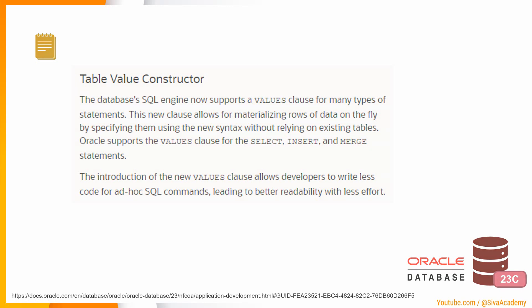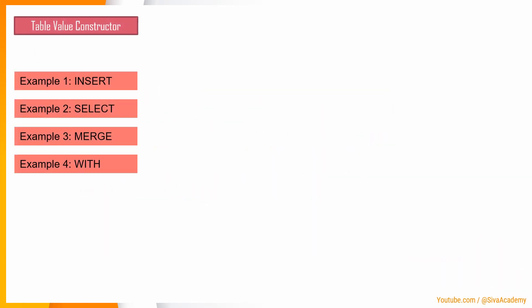We are going to see four examples. The first is for INSERT — in fact, the VALUES clause was already part of INSERT, but from 23c it is extended to support populating multiple rows of data. The second example is on SELECT, to understand how it is used there. The third example is on MERGE, how the VALUES keyword is used as part of MERGE. And the fourth example is how this VALUES keyword helps to provide data as part of the WITH clause.